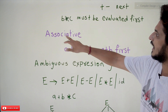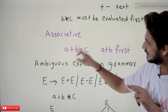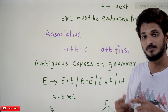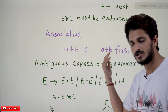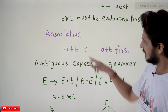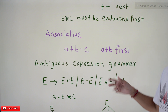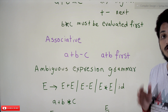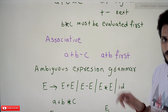The next concept is associativity. A plus B minus C — both plus and minus are having the same precedence. If they are having the same precedence, left associativity is maintained. Left associative means A plus B should be done first, then minus should be done next. So these conditions — precedence and associativity — if you follow them, then only we can correctly evaluate the expressions present in our language.